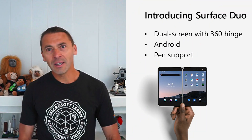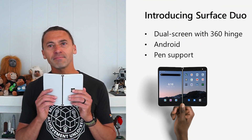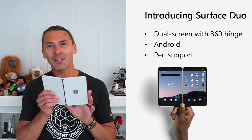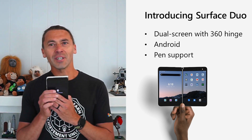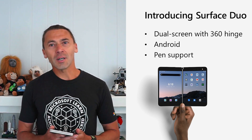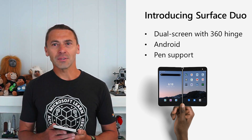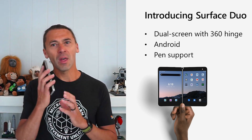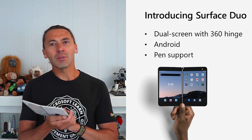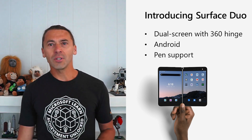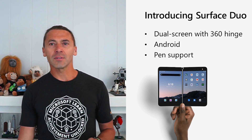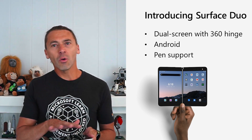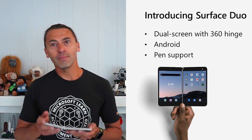This is a Microsoft Surface Duo. The first thing you'll notice is that it has two screens and a 360 degree hinge so that you can use it in a number of different postures — from single screen like your current phone, or you can open it up for double the display area. When using two screens you can multitask with two apps side by side, or you can span an app across both.